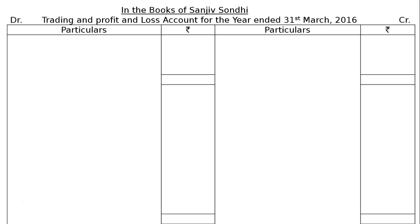There are four adjustments. There is no bad debt provision in the credit side of the trial balance, nor in the debit side, but in part D there is further bad debt and a new provision. Now we will start with the books of Sanjeev Sundi — Trading and Profit and Loss Account for the year ended 31st March 2016.